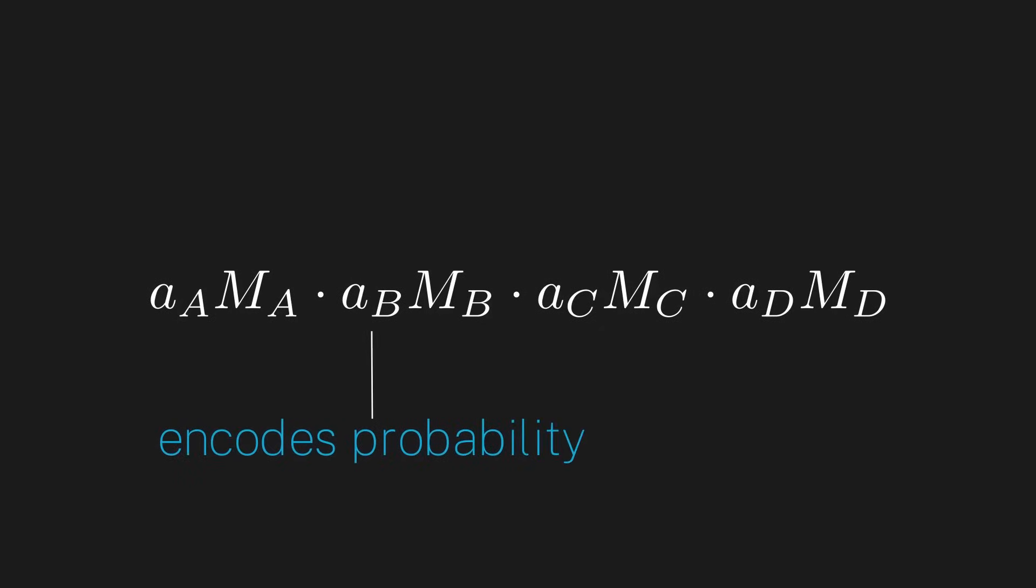Next, we also need to somehow codify the idea that some outcomes are more likely than others. So each mathematical object also needs to carry with it the probability of getting that particular outcome. Well, the simplest way to do this is to just add a number in front of each mathematical object, a number that somehow encodes how likely each possibility is to occur. Now let's take a step back and look at what we have.